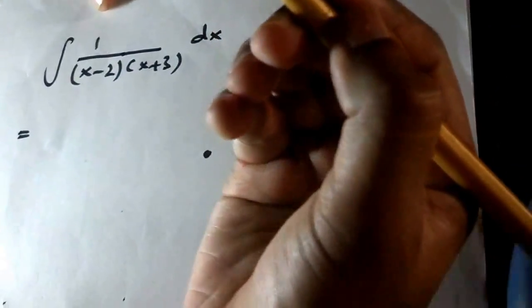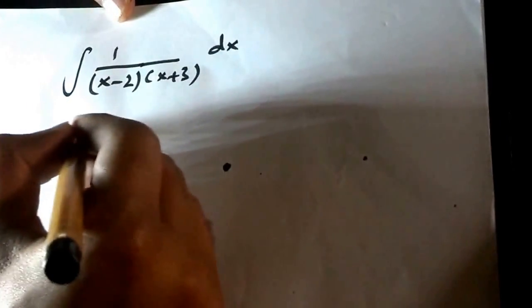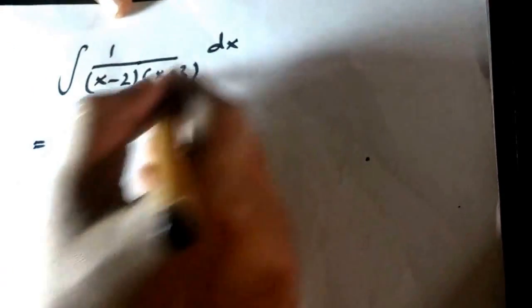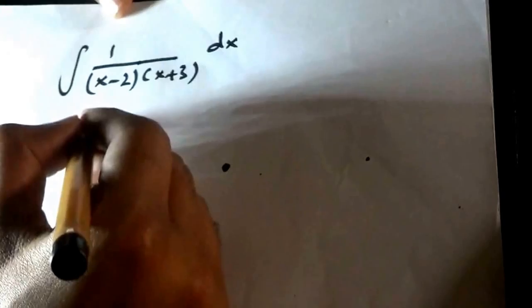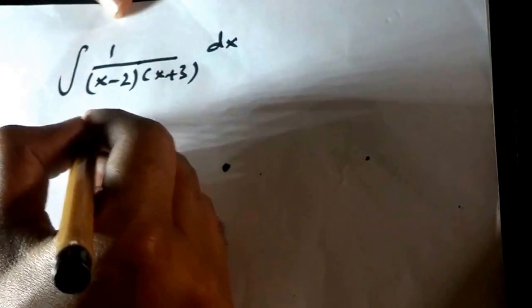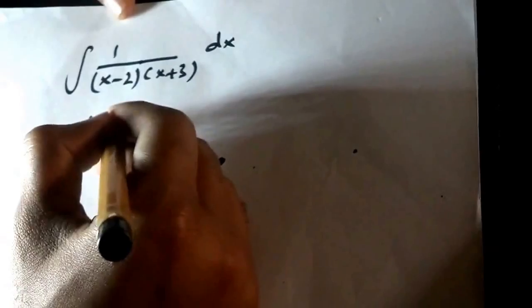I will do it in my mind in one step okay so this will be x minus 2 equals to 1 by 5 and then x minus 2.